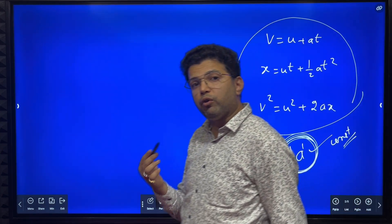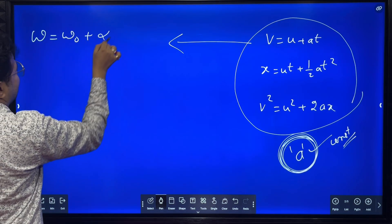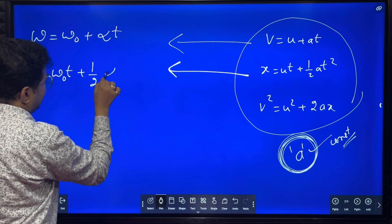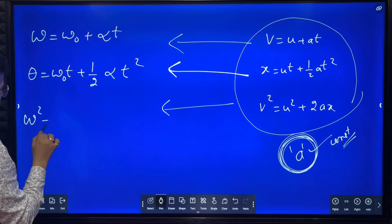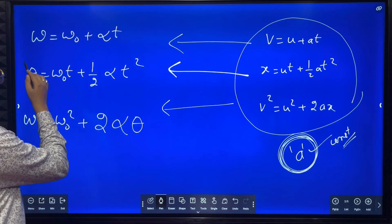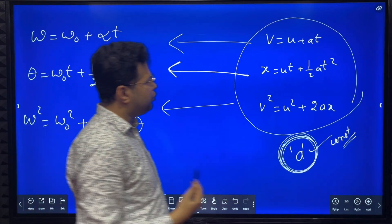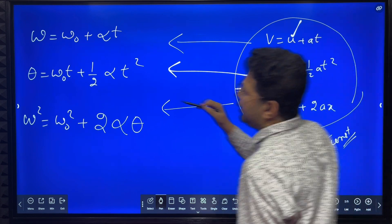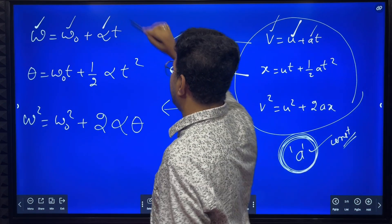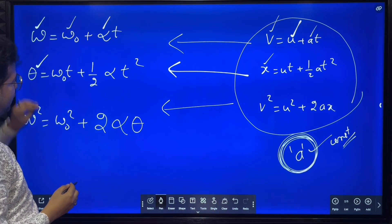In circular motion, if the body is moving with constant angular acceleration, then we use the angular analogues: omega equals omega-0 plus alpha·t, theta equals omega-0·t plus half alpha·t squared, omega squared equals omega-0 squared plus 2·alpha·theta. Here initial velocity is replaced by initial angular velocity, final velocity by final angular velocity, linear acceleration by angular acceleration, and displacement by angular displacement. These are the kinematic equations for rotational motion.